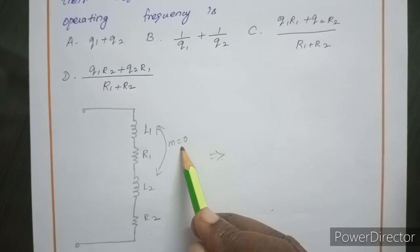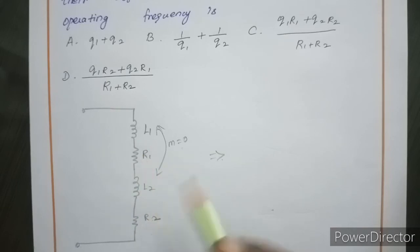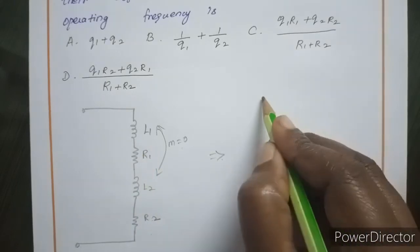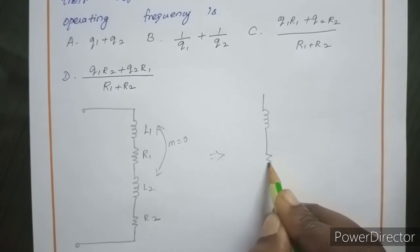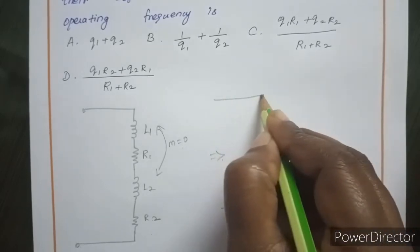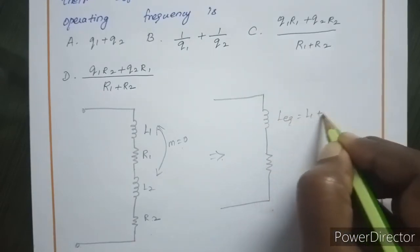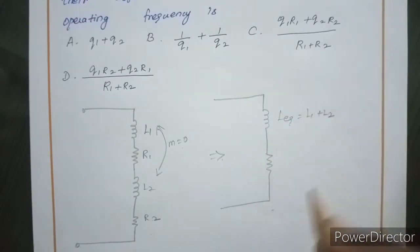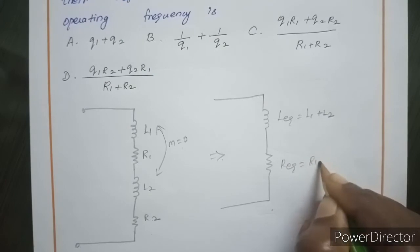Since the coils are uncoupled, mutual inductance M is equal to zero. Connected in series: L1 and L2 are in series, and R1 and R2 are in series. So L equivalent equals L1 plus L2, and R equivalent equals R1 plus R2.